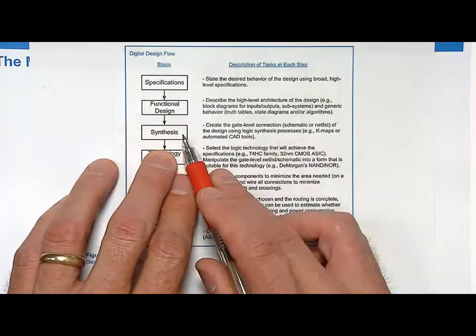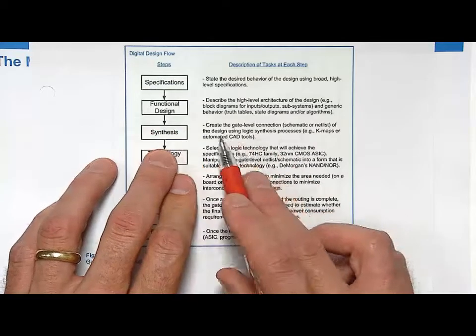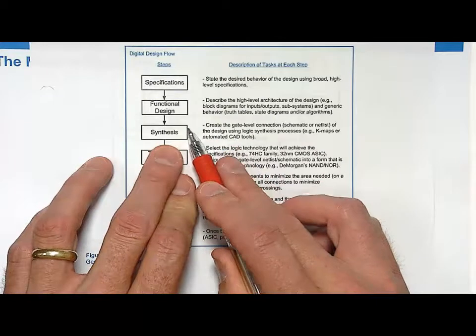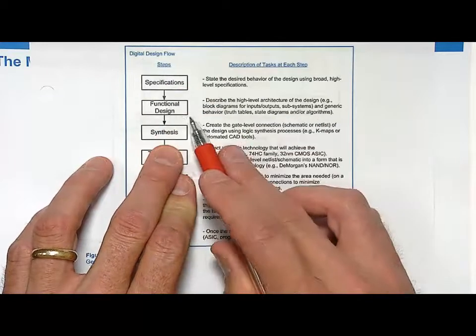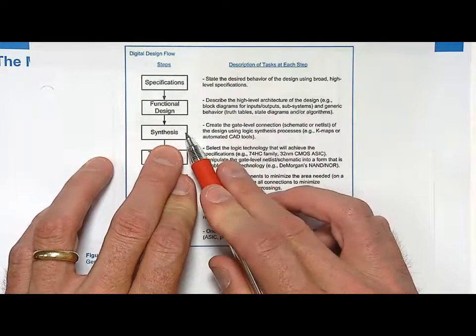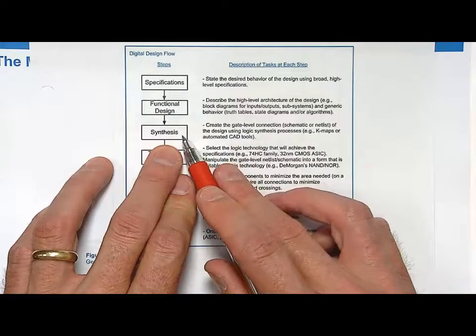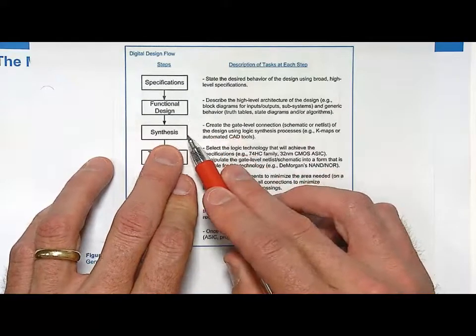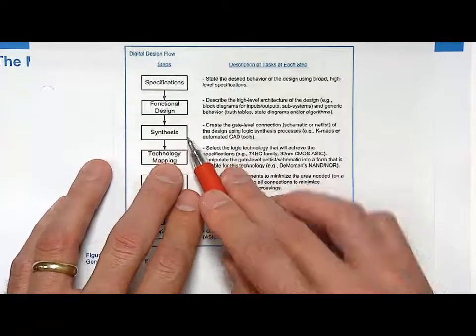Then you go into synthesis. Synthesis is where you take that functional description and you create the logic for it. Remember this is digital design. This is where you're going to implement, everything's going to be a gate at some point or some storage, digital storage device. You take the functional description and you synthesize it into the gate level.